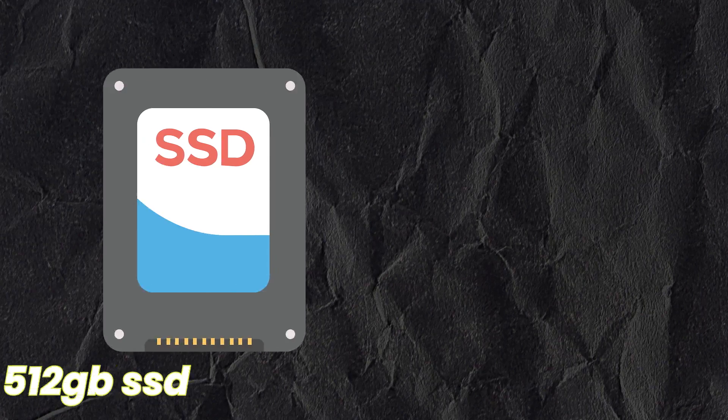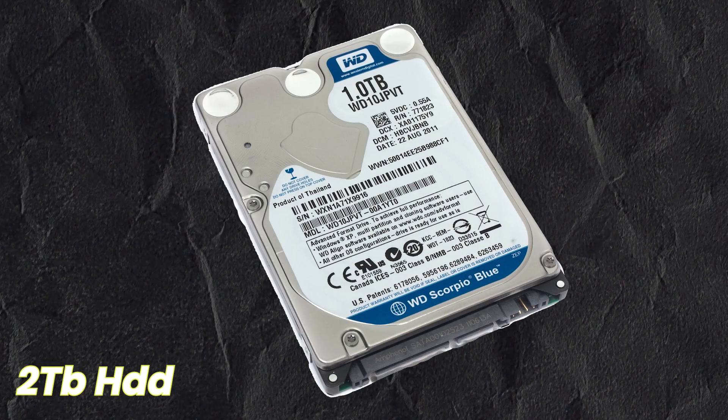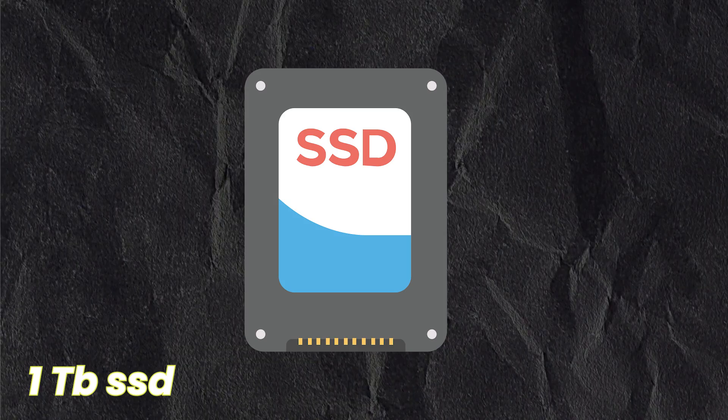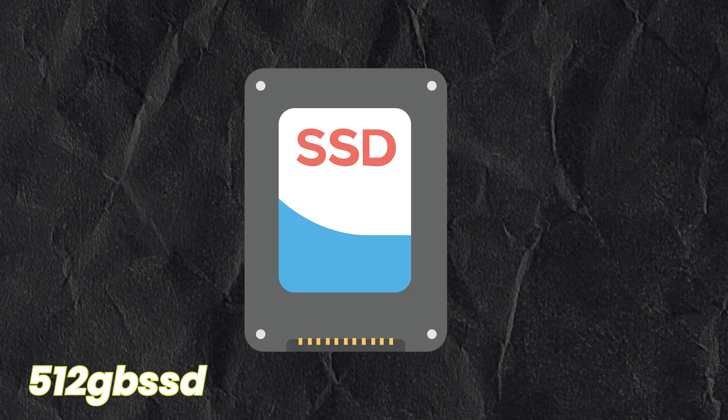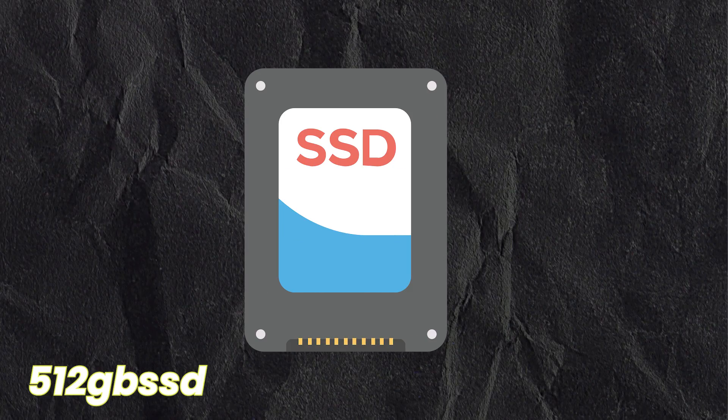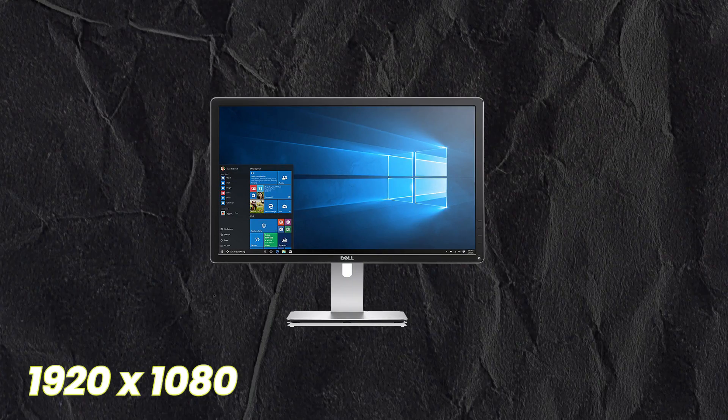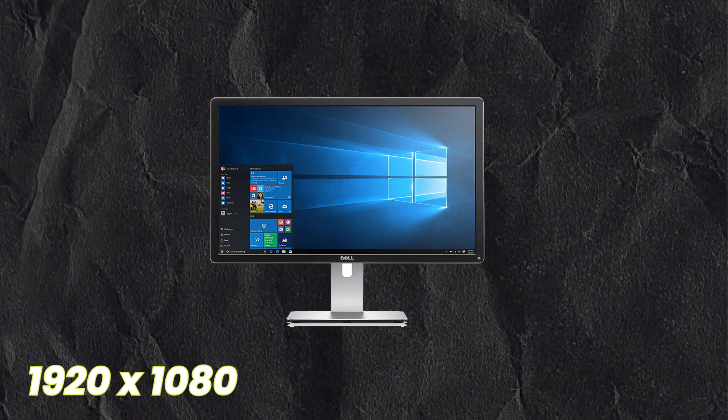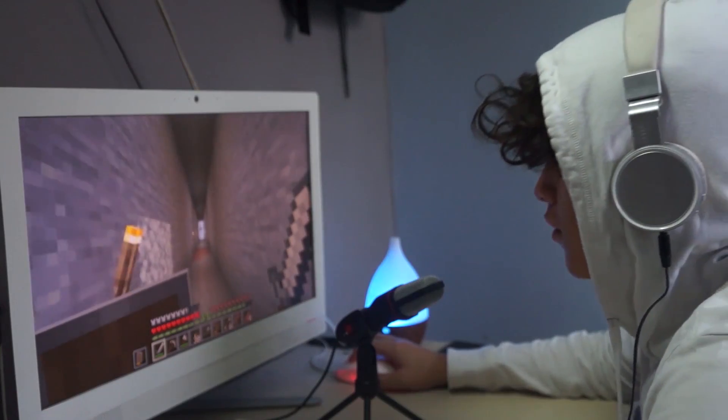An AMD Radeon RX 6700 XT should also keep things smooth. For memory in this range, go for a 16GB kit or even 32GB if you can afford it. For storage, a 512GB SSD paired with a 2TB HDD, or a 1TB SSD and 512GB HDD, is a good combination and should give you plenty of space. For display, 1920x1080 is fine for this range, but consider 1440p if you're going for higher quality games.